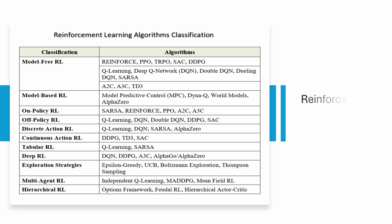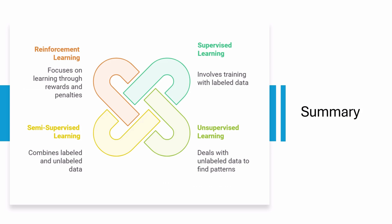Techniques like Q-learning and Deep Q-Networks (DQN) help agents learn from their experiences and improve their decision-making over time. In conclusion, understanding these four types of machine learning — supervised, unsupervised, semi-supervised, and reinforcement learning — enables us to choose the right algorithms for various applications. Each type has its strengths and use cases.